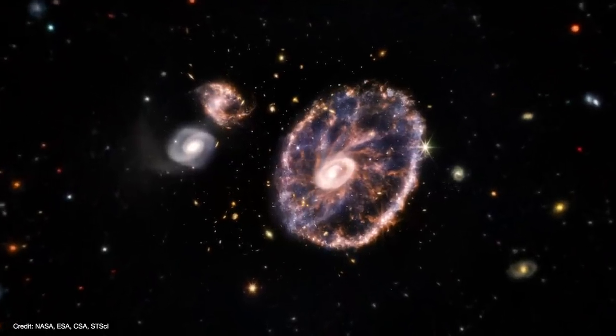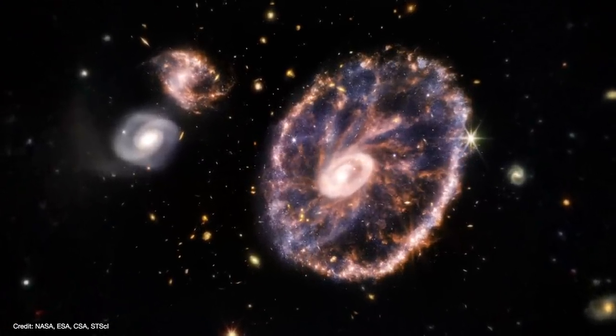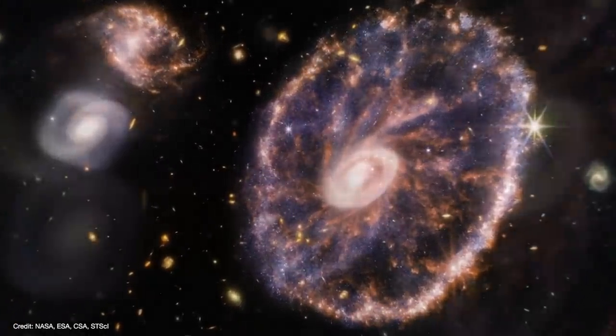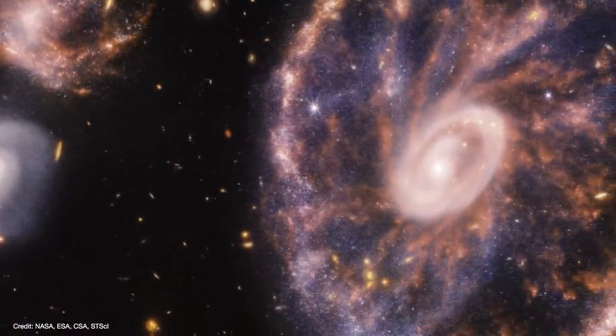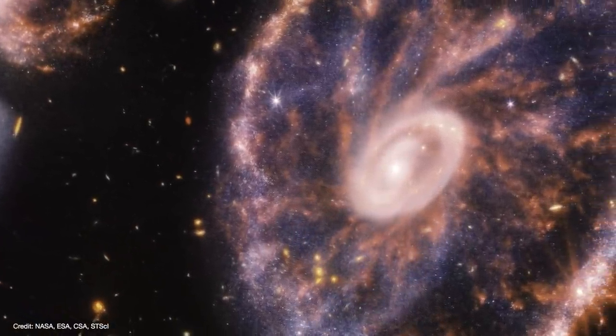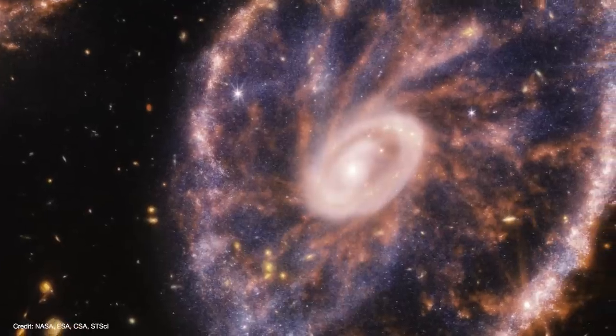The James Webb Space Telescope released a stunning image of the Cartwheel Galaxy. It shows what appears to be the aftermath of a cosmic hit-and-run. The galaxy was once most likely a spiral, much like our home galaxy, the Milky Way.